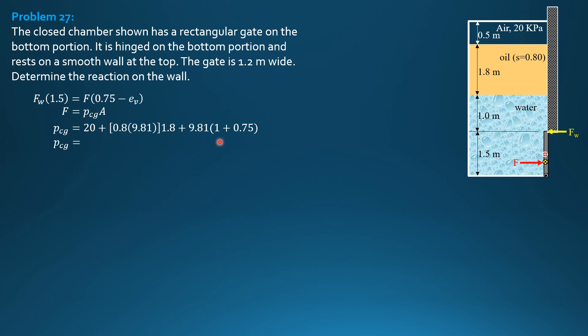So pressure at the centroid is equal to 51.294 kilopascals. Therefore the force F is pressure at centroid times area of the gate, where the area of the gate is 1.2 times 1.5, 1.2 width 1.5 height. So F is 92.33 kilonewtons.